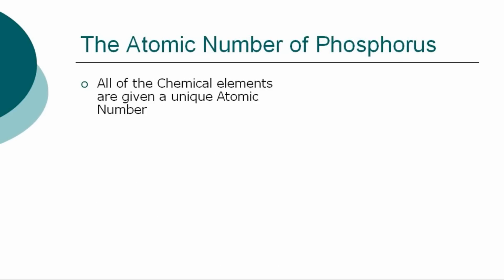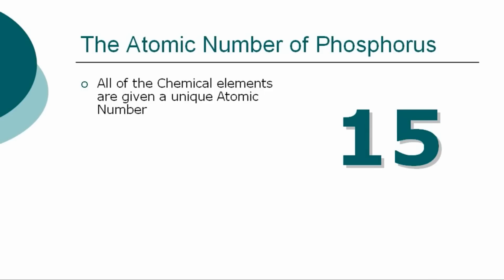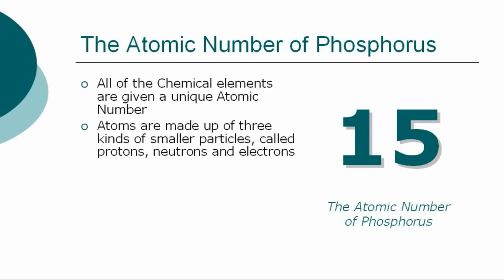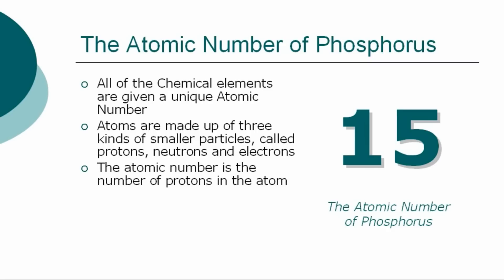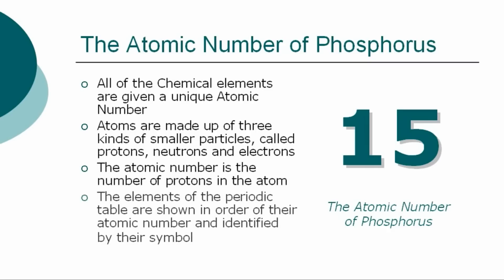All of the chemical elements are given a unique atomic number. The atomic number for Phosphorus is 15. Atoms are made up of three kinds of smaller particles, called protons, neutrons, and electrons. The atomic number is the number of protons in the atom. The chemical elements of the periodic table are shown in order of atomic number and identified by their symbol.